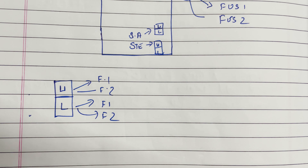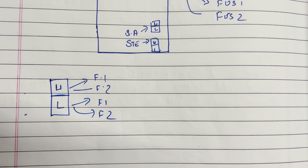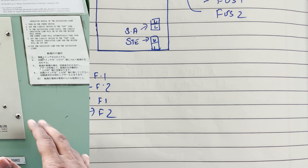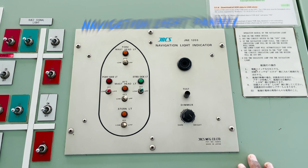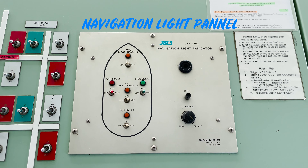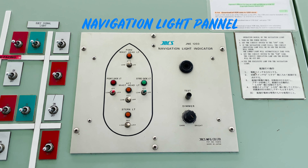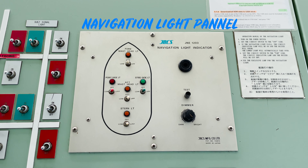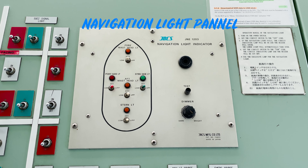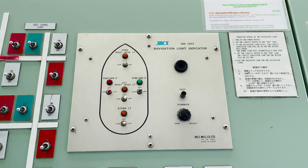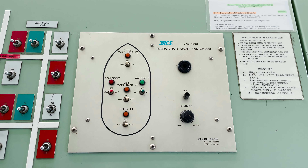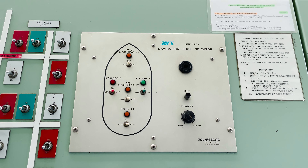By knowing this, we can now continue with our video further. This is my navigation light indicator panel. From here I can switch between lower and upper navigation lights. Normally there are two types of checks which we have to perform.